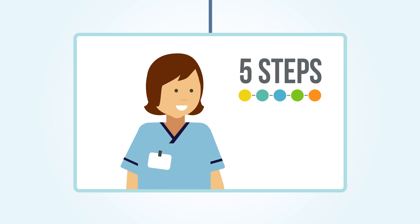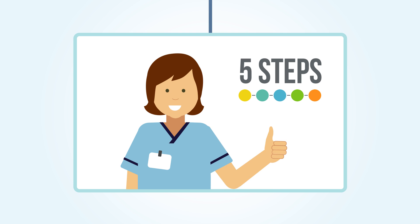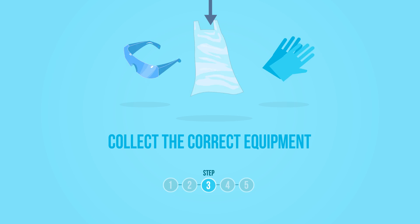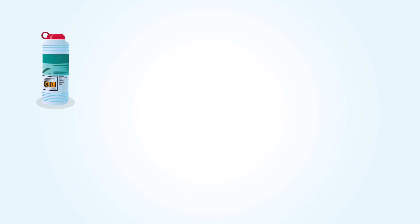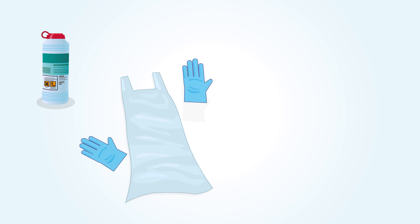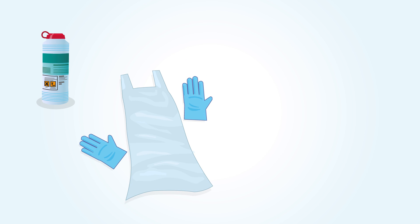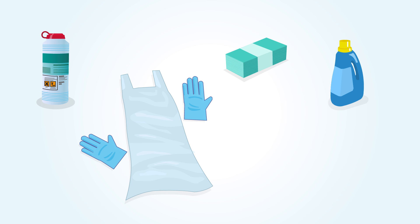Nuria can now follow the appropriate steps to successfully manage the spillage. Step 3: collect the correct equipment. Nuria gathers chlorine releasing granules, non-sterile disposable gloves and apron, paper towels, general purpose neutral detergent, and a healthcare waste bag.